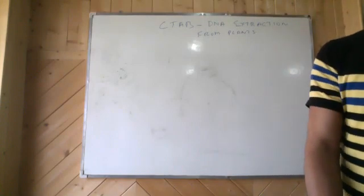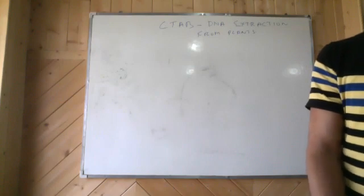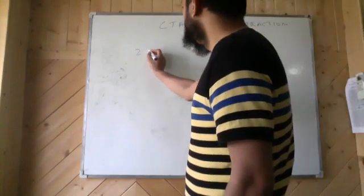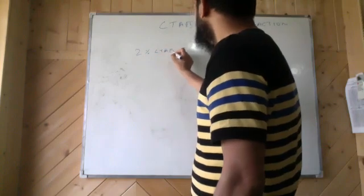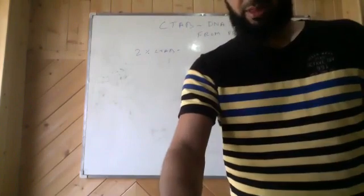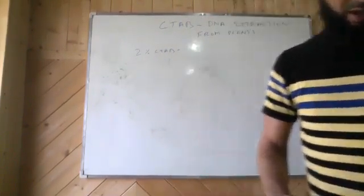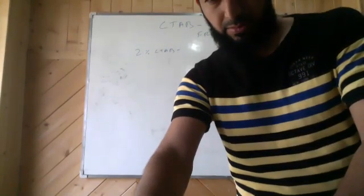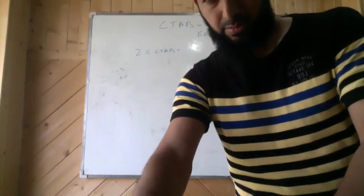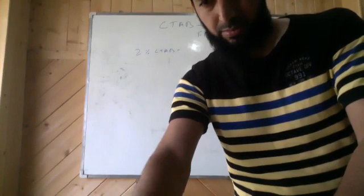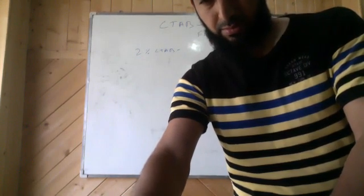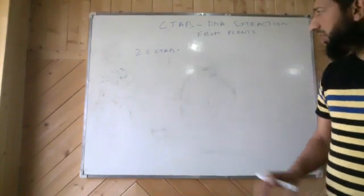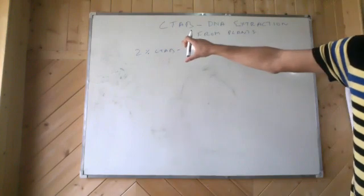So initially what we do, we use a 2% CTAB solution. This is a cationic detergent. So we use a 2% CTAB solution.